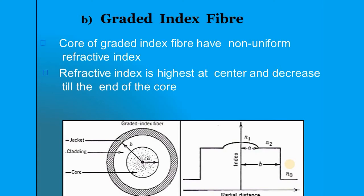Graded index fiber is different from step index fiber — the refractive index of the core is no longer constant. It goes on decreasing from the center as it reaches the cladding. Refractive index is highest at the center and decreases until the end of the core. The cladding still has a uniform refractive index. Because of this non-uniform, gradually decreasing distribution from the center, it is called graded index fiber — the refractive index is graded.